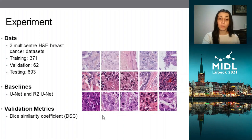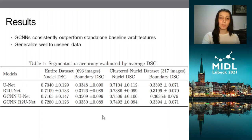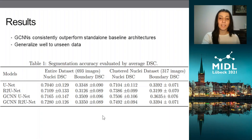To validate our results, we used the DICE similarity coefficient. We found that the GCNNs consistently outperformed standalone baseline architectures — this was true for the entire dataset, and even more so for a subset of images that only contained close proximity nuclei. We also noticed that not only were the boundary segmentations improving, but the nuclei segmentations too.